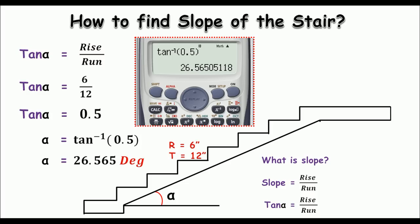So alpha, or you can say the slope of the stair, is just 26.565 degrees, and that's it. This is just our requirement.